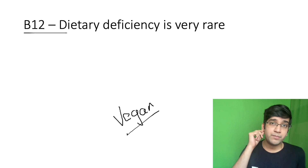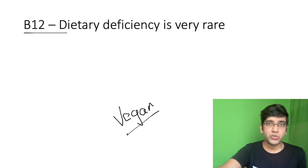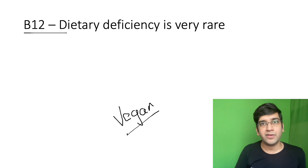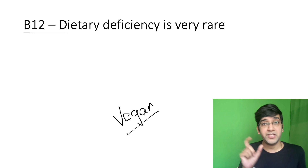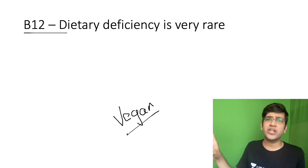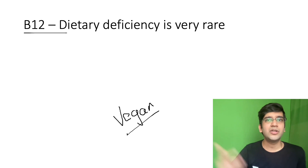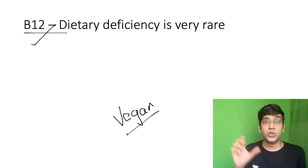Another point against B12 deficiency: to develop B12 deficiency due to diet causing anemia, the history should be a minimum of three to five years. If I stop eating milk or become vegan today, I will not have megaloblastic anemia within a few months, because I have enough stores for the next three to five years in my body for B12. So dietary deficiency of B12 will have a very long history. Ordering food online for a few months is not a very long history — it's not three to five years. Dietary deficiency takes a very long time to cause B12 deficiency because the stores are sufficient.